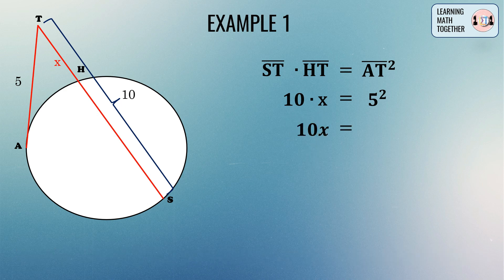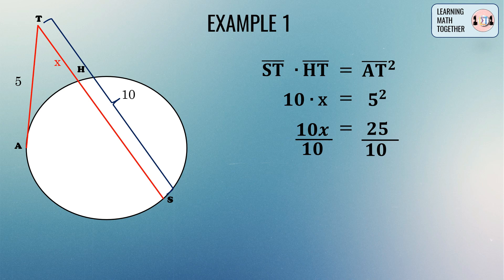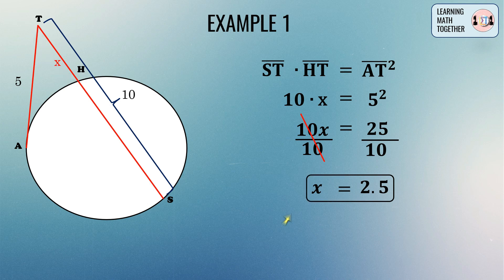Getting the square of 5 gives us 25, so we have 10x equals 25. Dividing both sides by 10 gives x equals 2.5. Therefore, the value of x, or line segment HT, is equal to 2.5 units.